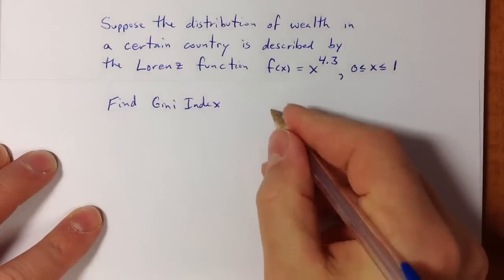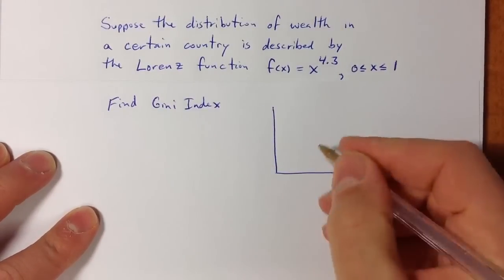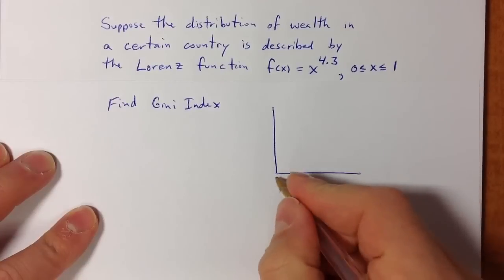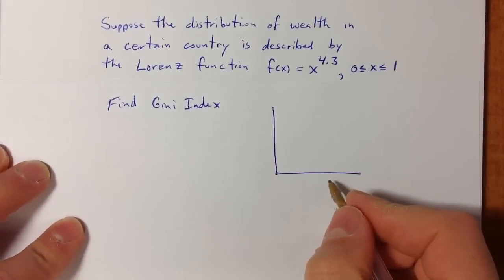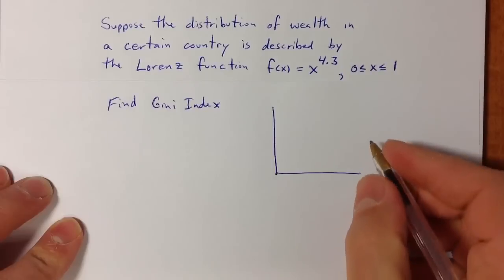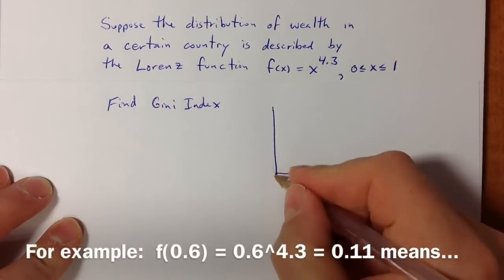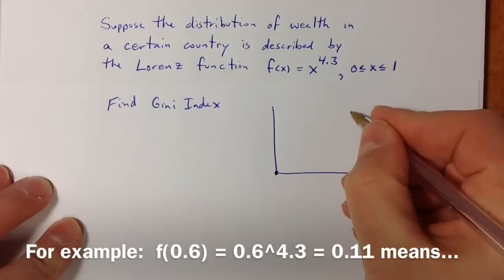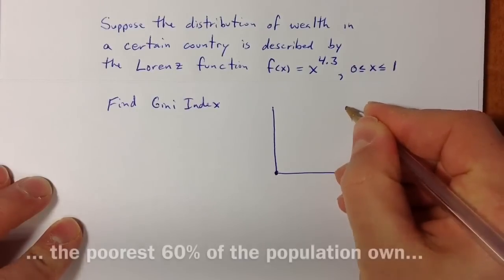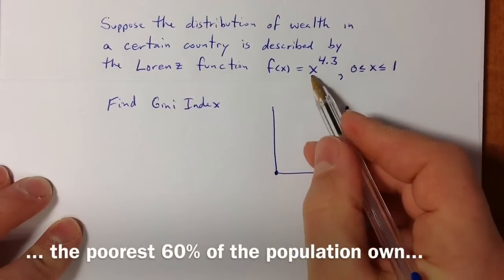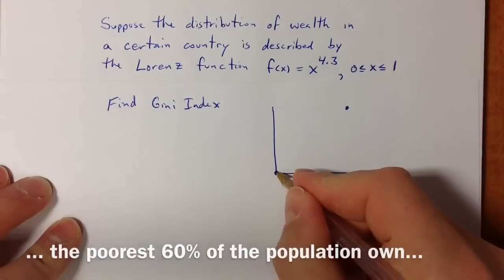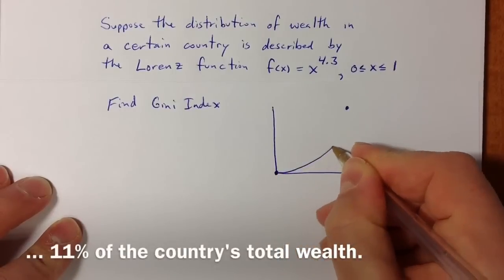The Lorenz function describes the wealth owned by the poorest x percent of the population. It passes from (0,0) to (1,1), and our function here passes from (0,0) to (1,1) and curves upward like this.